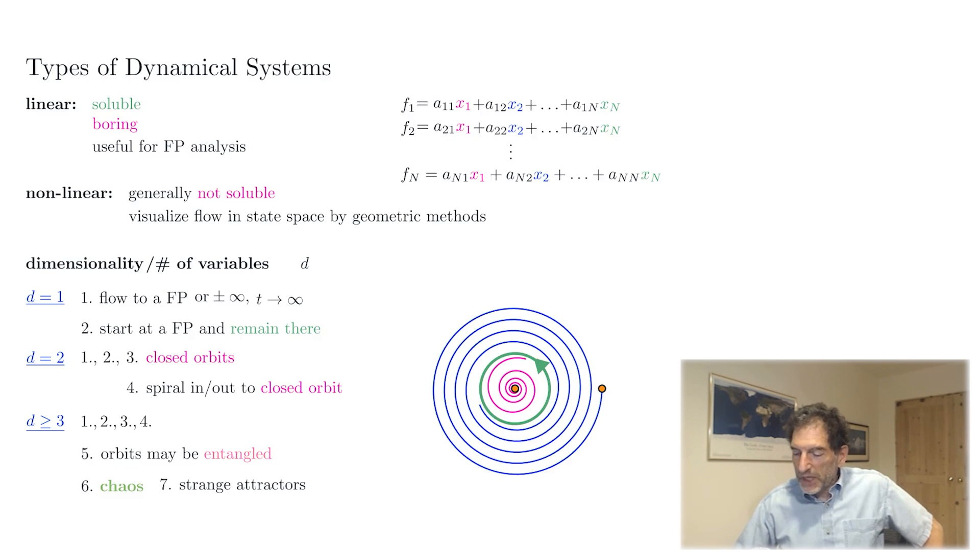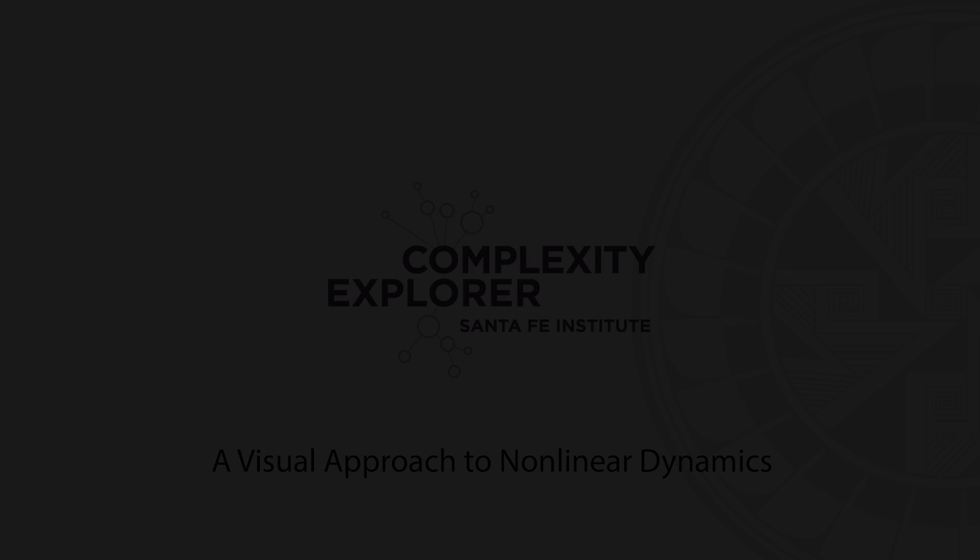So these are the types of behaviors that exist in dynamical systems: linear, nonlinear, as a function of the dimensionality.